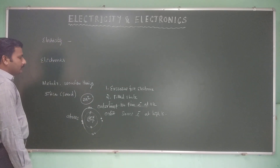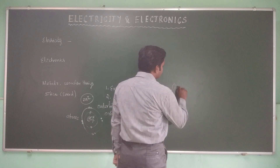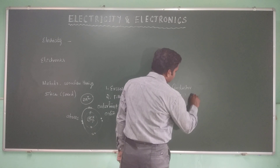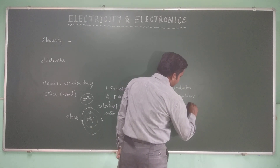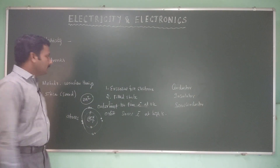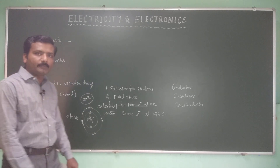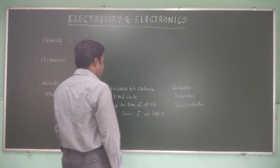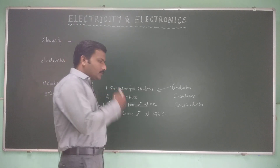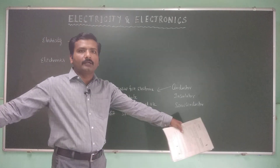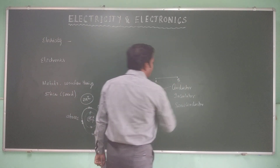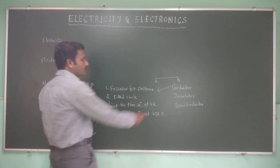Based on electron availability in a material, you can classify materials into conductors, insulators, and semiconductors. A conductor, like metals or the human body, has more free electrons to move. An electron can move freely from point A to point B in a metal. That is called a conductor.